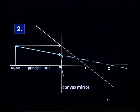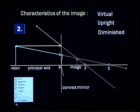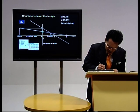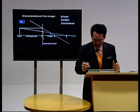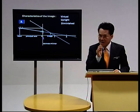The point of intersection is here and I have my image. Again, what are the three characteristics? It is going to be virtual, upright, and smaller than the object. Now let me explain why a ray going from C to the mirror gets reflected along the same direction.